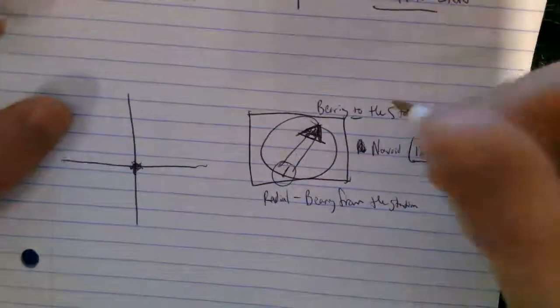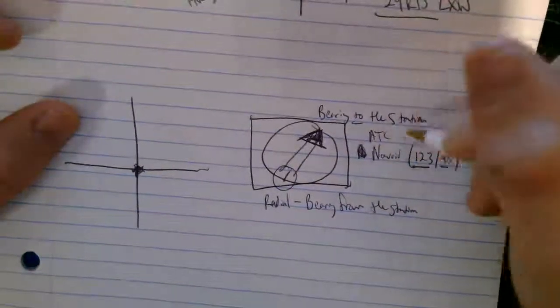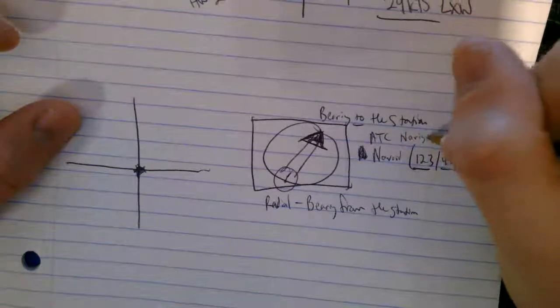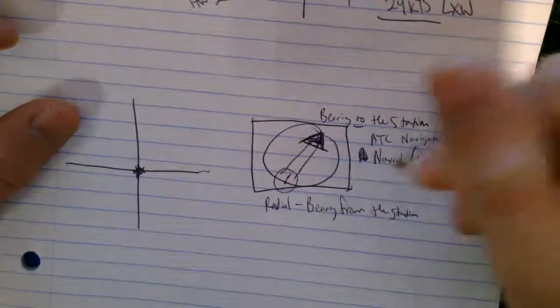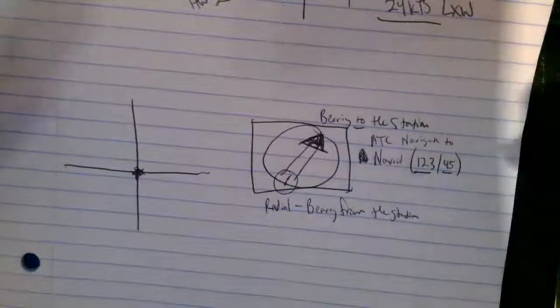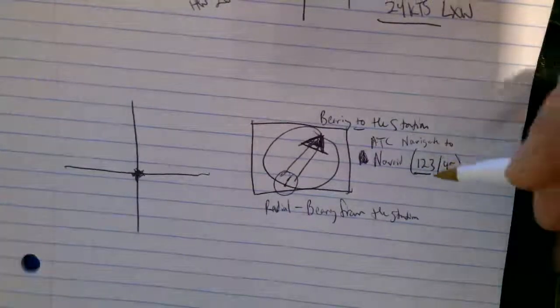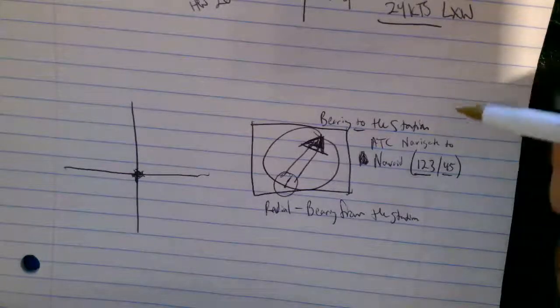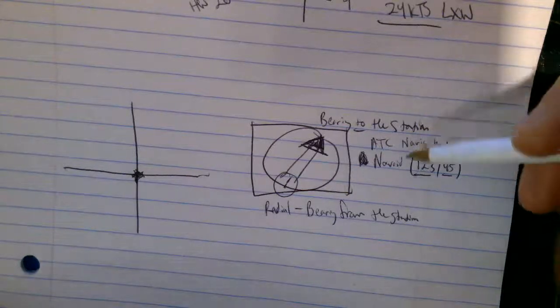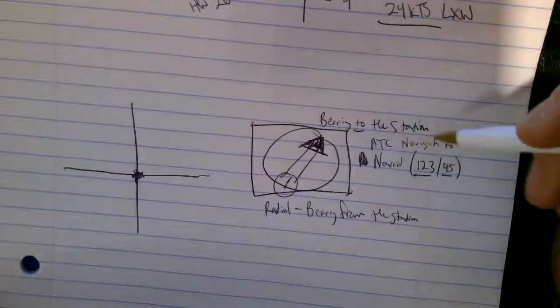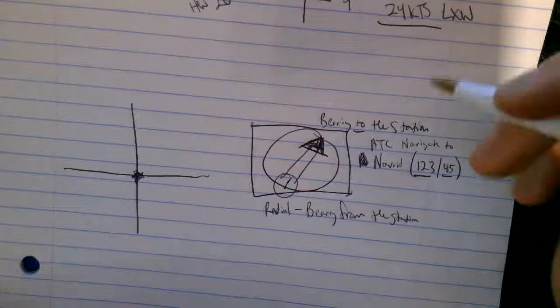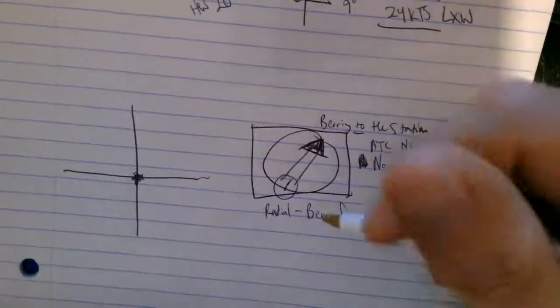So if ATC tells you to navigate to the NavAid's 1, 2, 3, and 4, 5, then you're going to be navigating to a radial DME, okay? And so, a lot of the situations you're going to see on the exam is ATC tells you to navigate from your position to a NavAid's 1, 2, 3, and 4, 5.